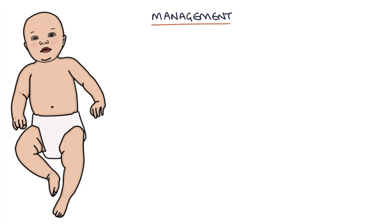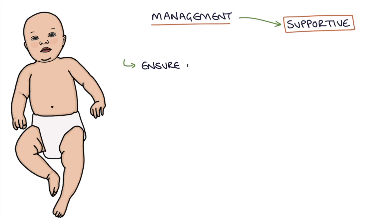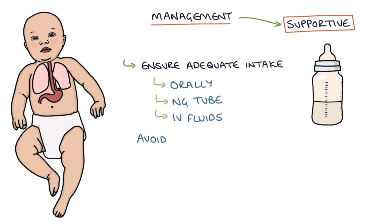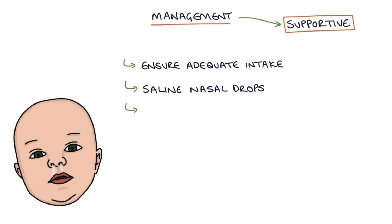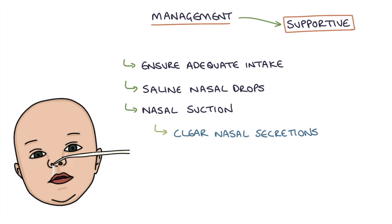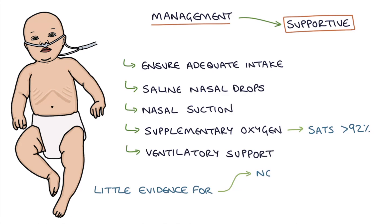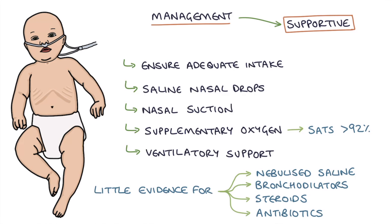Management typically involves only supportive care. This includes ensuring adequate intake, which could be oral, via a nasogastric tube, or IV fluids depending on severity. It's important to avoid overfeeding as a full stomach will restrict breathing, so start with small frequent feeds and gradually increase as the baby tolerates. Saline nasal drops and nasal suctioning can be helpful to clear nasal secretions, particularly prior to feeding. Supplementary oxygen may be necessary to keep oxygen saturations above 92%, and ventilatory support may be required. There is little evidence for treatments such as nebulized saline, bronchodilators, steroids, and antibiotics, and these should not be routinely used.